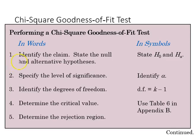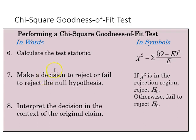Here are our steps. We first begin by stating the claim mathematically, identifying the level of significance — the alpha level — and identifying the degrees of freedom, k minus one, where k is the number of categories. We determine the critical value using our chi-square table and from that determine our rejection region. We then calculate our test statistic using our formula, make a decision based on where it falls relative to our cutoff values — whether it's in the rejection region or not — and either reject the null or fail to reject the null. Then we go back to our initial claim and interpret the decision in context.